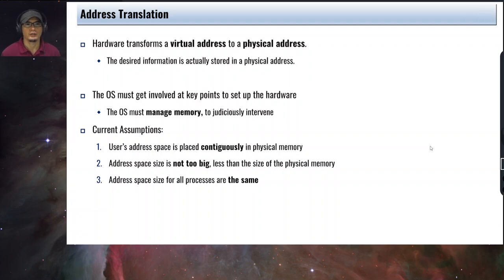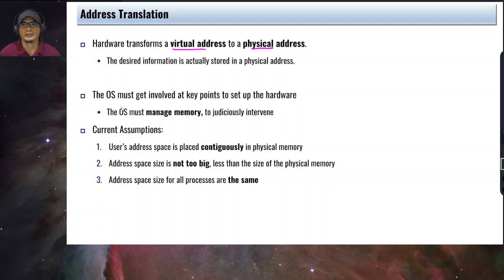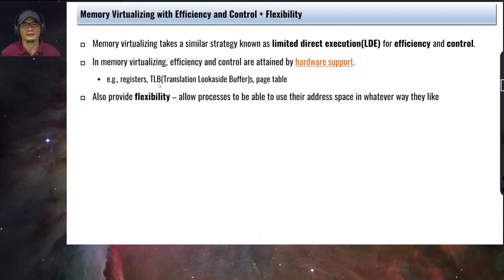Now let's focus on address translation. By now you know already that a process's view of the address space is in the form of virtual addresses, and these virtual addresses are translated or transformed into physical addresses. Physical addresses are the actual physical locations in main memory. In order to perform address translation, the OS must get involved at key points to set up the hardware.